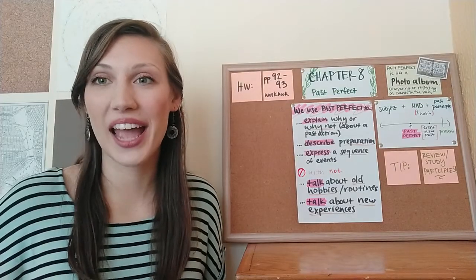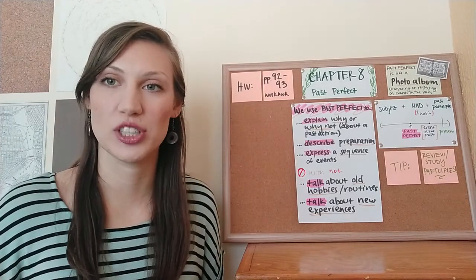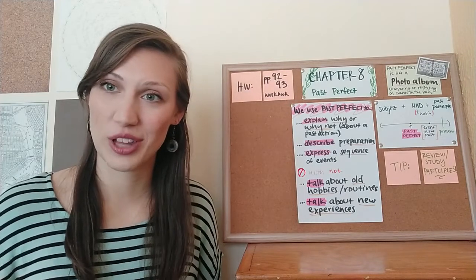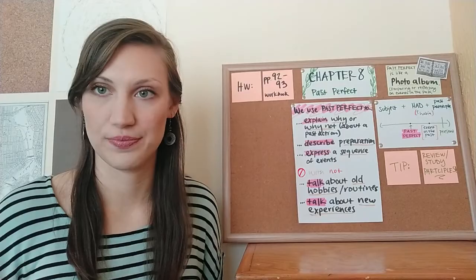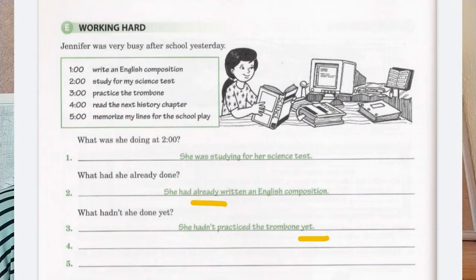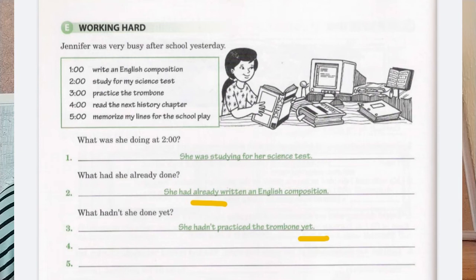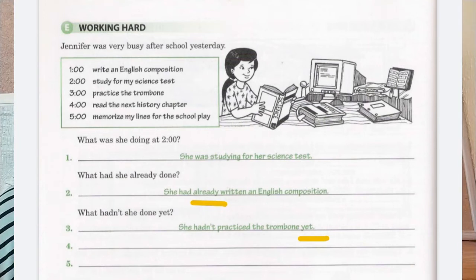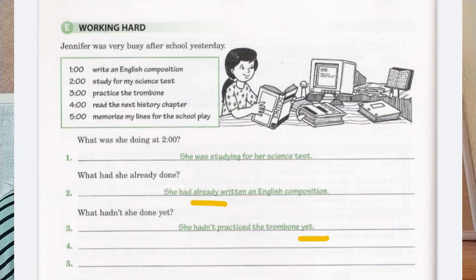We are almost done, but let me give you a few tips for your homework, which is pages 92 and 93 in your workbook. Let's look at the example in number two. In this sentence, you will see a time expression that should look very familiar: 'already.' Remember that 'already' means 'ya,' and notice that we place 'already' between the auxiliary verb 'had' and the past participle. Let's look at the example in number three — another familiar time expression: 'yet.' We usually use 'yet' with negative sentences and in questions, and in both cases, 'yet' is usually at the end of the sentence.